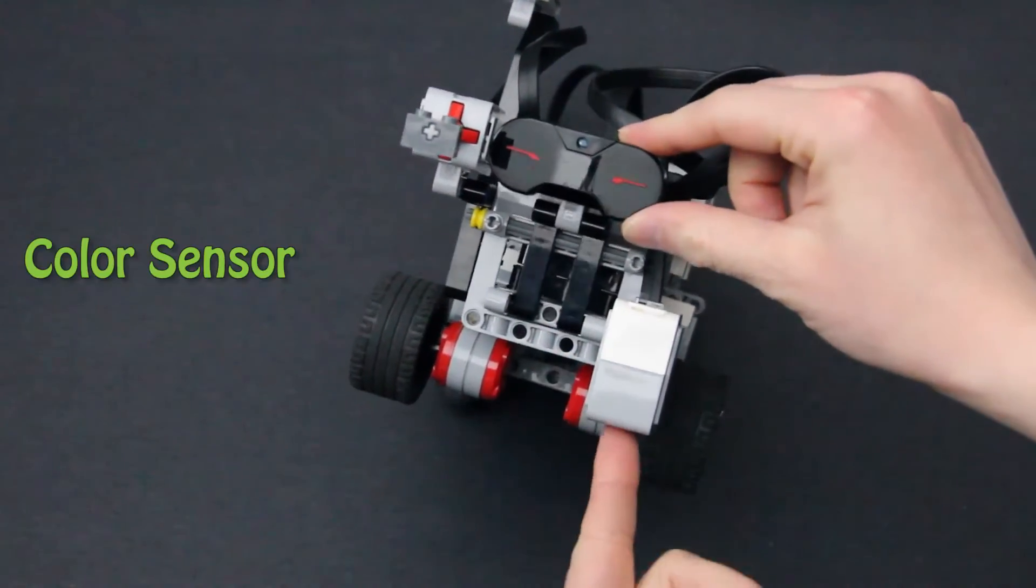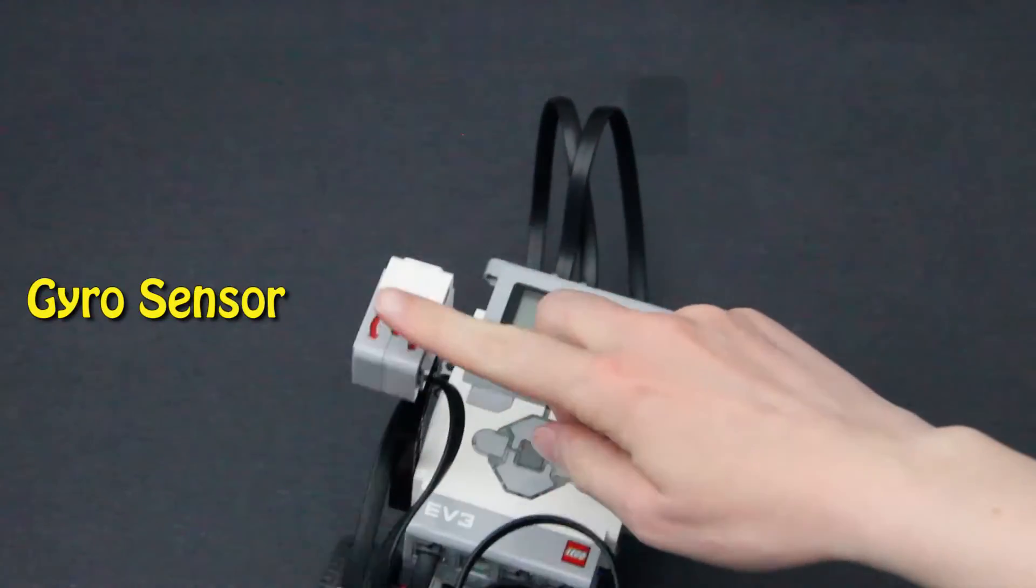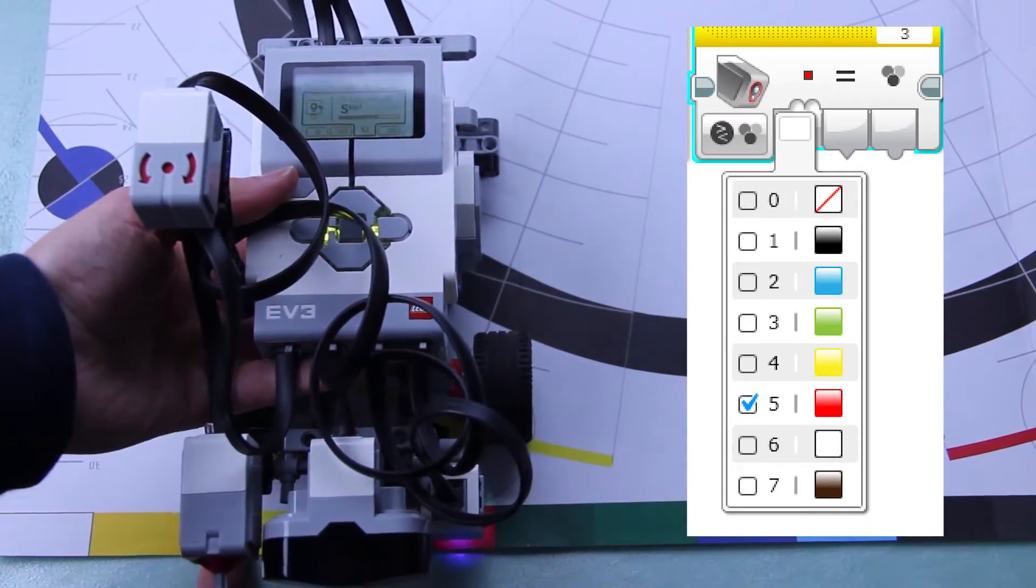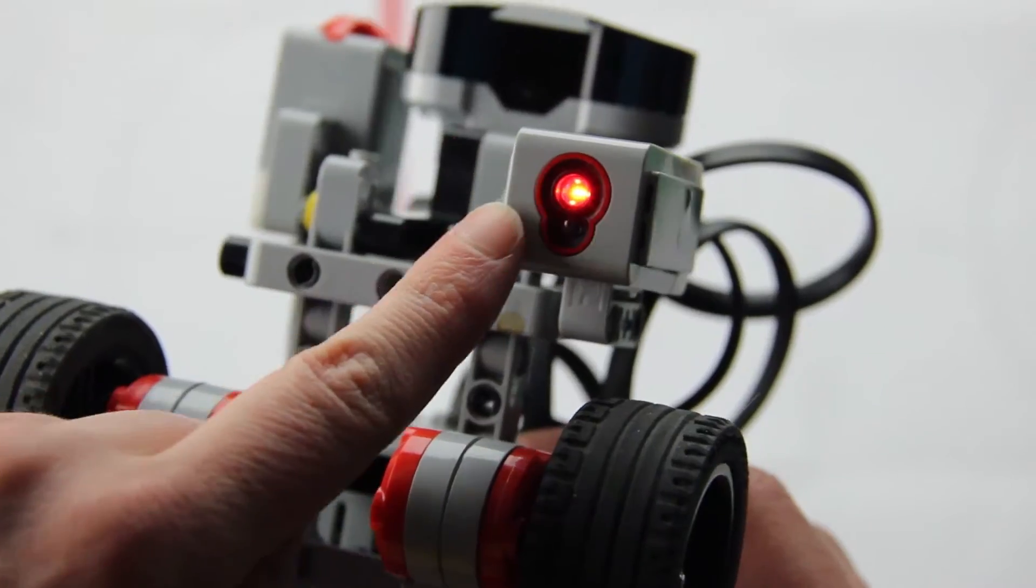In our LEGO Robotics series we pointed out that robots interact with the world using sensors. You can write programs that use information gathered from these sensors to change what the motors on the robot do. To understand how the sensors, the code, and the motors communicate,